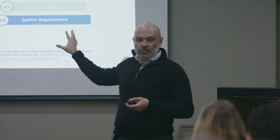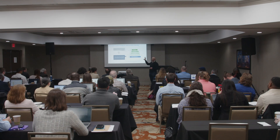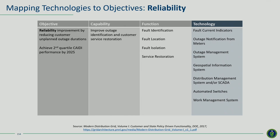Let me illustrate this. In the context of reliability, if we have an objective of reaching a particular quartile of customer average interruption duration index, what's the capability that enables that objective? We might need to improve outage identification and customer service restoration. Unpacking further, we can identify specific capabilities: fault identification, fault location, fault isolation, service restoration. Underneath those are different systems, technologies, and functionalities that enable those four functions — showing how you start from an objective and work down to individual technologies.